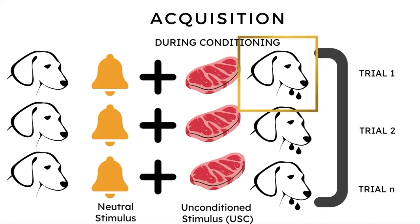Following the acquisition stage, we observe that the neutral stimulus becomes a conditioned stimulus and elicits the same response as the original unconditioned stimulus. This means you no longer need the unconditioned stimulus to elicit the response — you only need the conditioned stimulus. In Pavlov's experiment, when the dogs salivate at the sound of the bell, acquisition of the stimulus-response mapping has occurred.